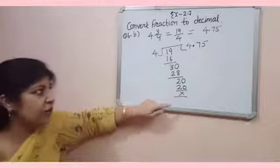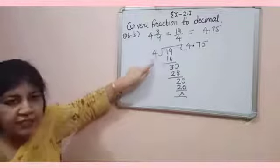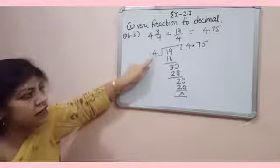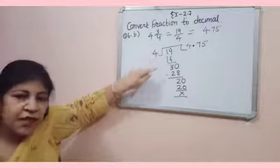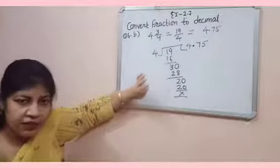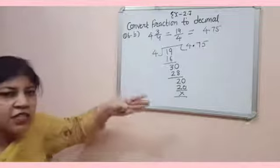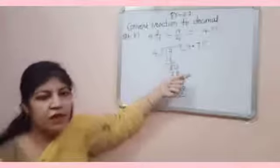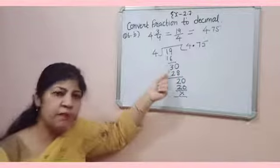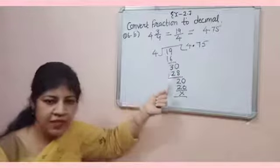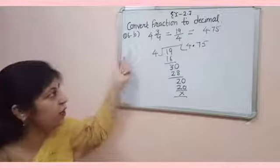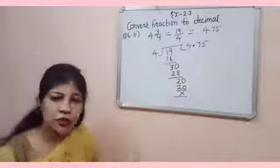But, in some cases, the dividend is not exactly divisible by the divisor. That, we will discuss later. In those cases, you have to find up to 2 places or 3 places decimal. So, in this way, you can convert fraction to decimal.